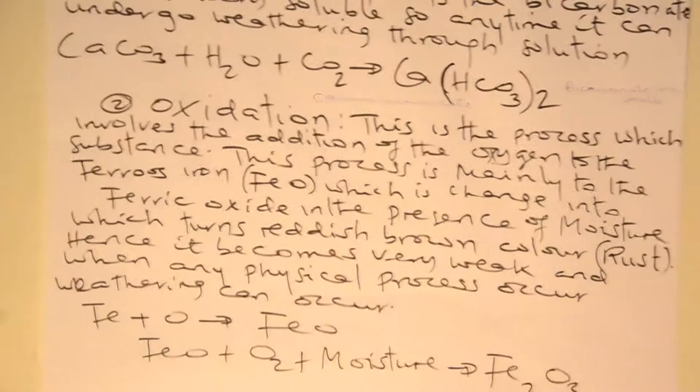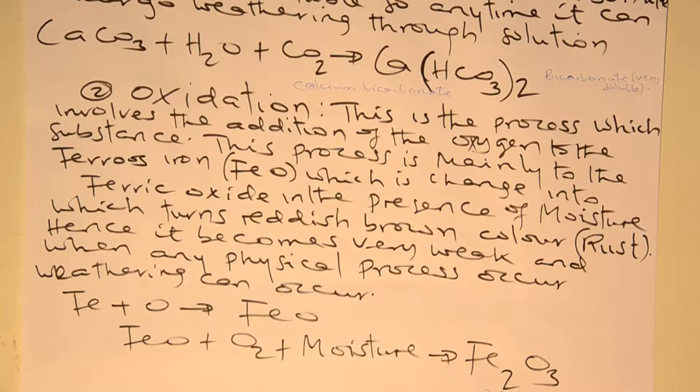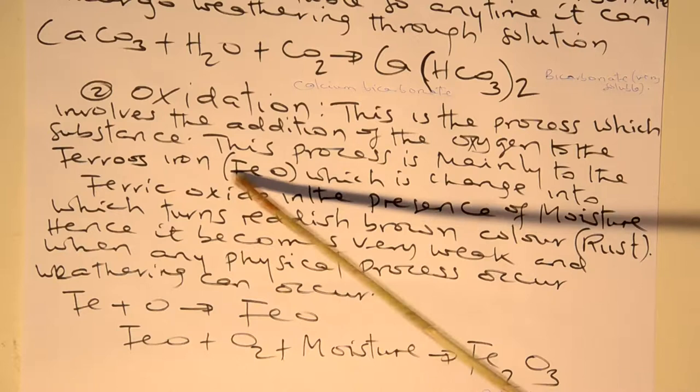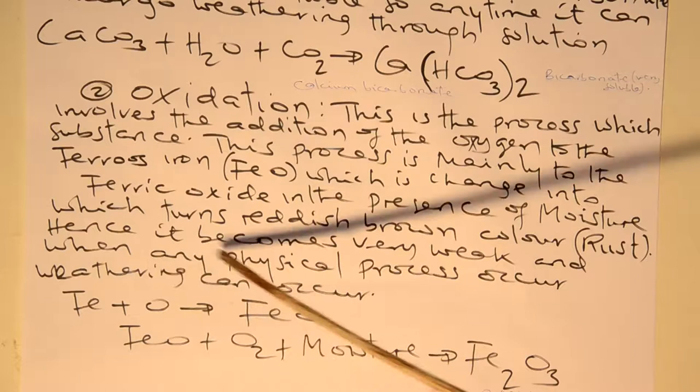Another process is called oxidation. Oxidation is the process of oxygen gas reacting with certain rock minerals. It involves the addition of oxygen to the substance. This process is mainly affecting ferrous ions, which change into ferric oxide in the presence of moisture, which turns reddish-brown — which is rust in nature. Hence, it becomes very weak and weathering can occur. Assume our landmass consists of mineralization of iron, and this iron in the presence of oxygen gas.